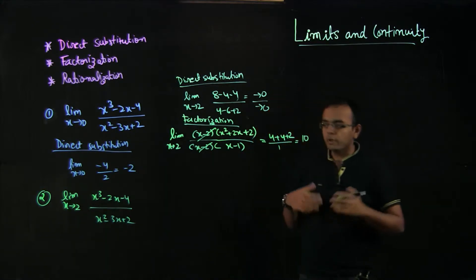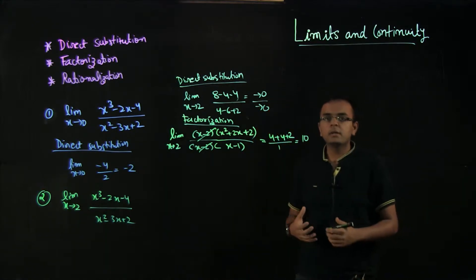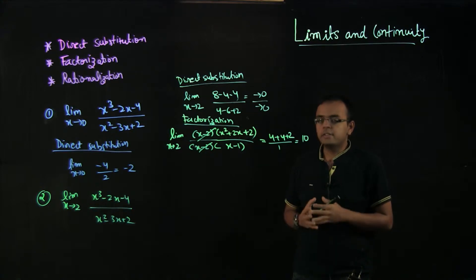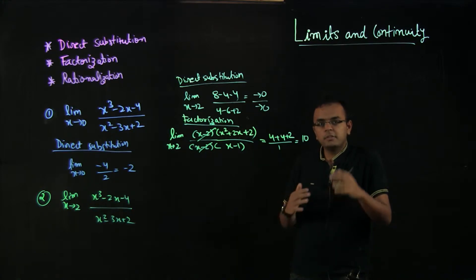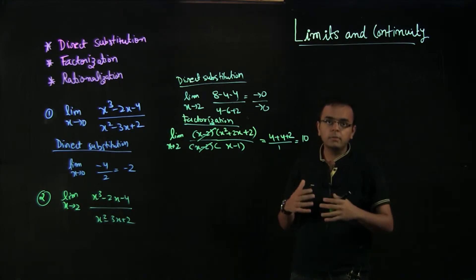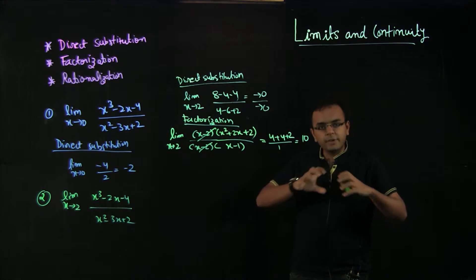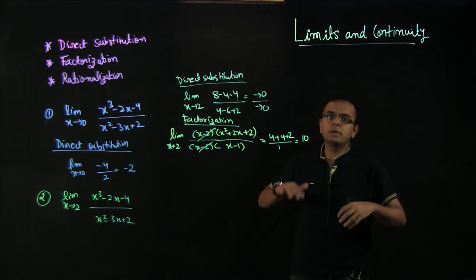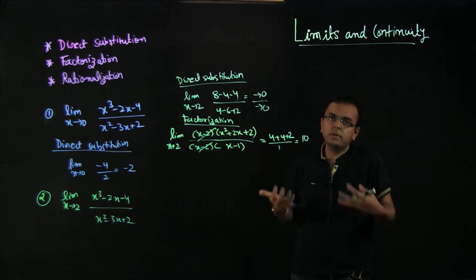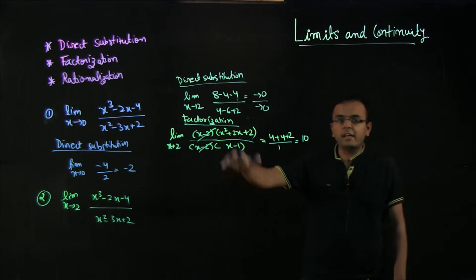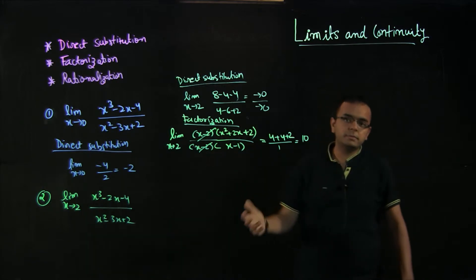Whenever you see approaching 0 by approaching 0, try to factorize and cancel out the terms which are creating the problem. In this case, x minus 2 was the factor causing the issue.